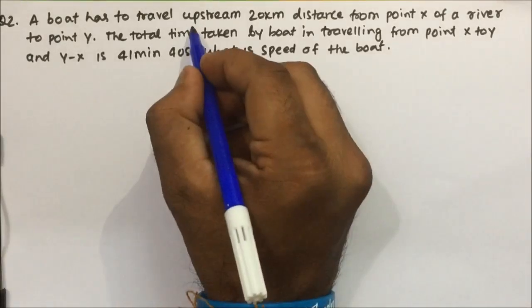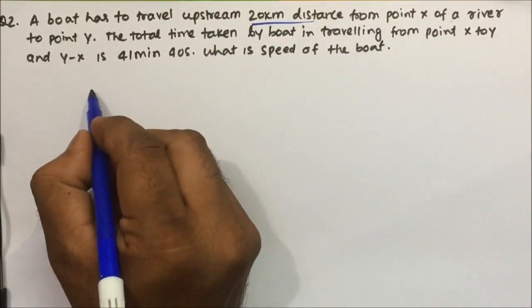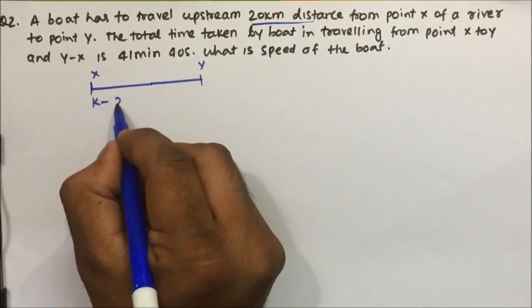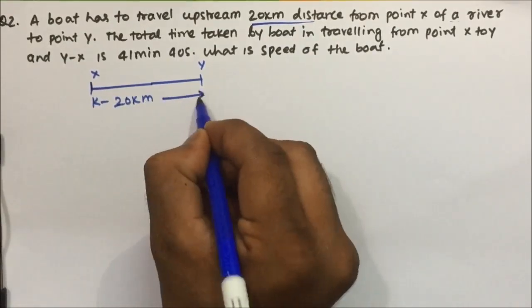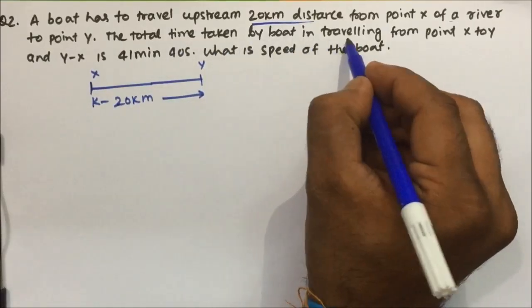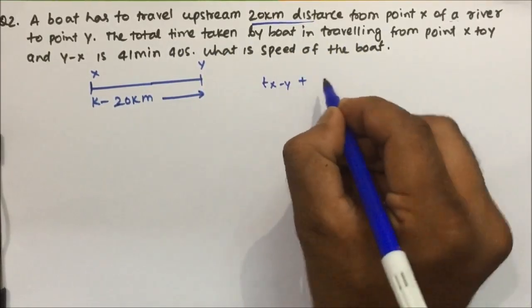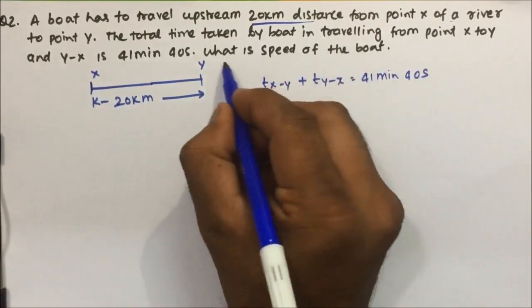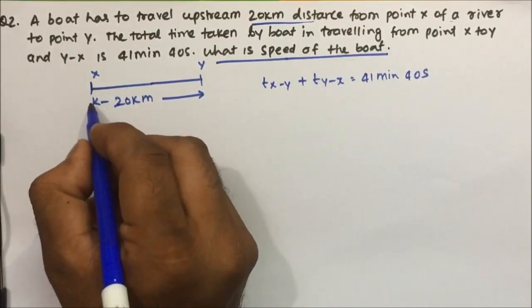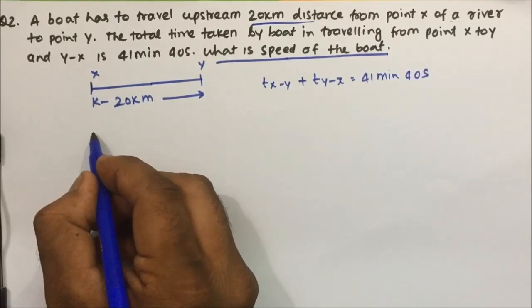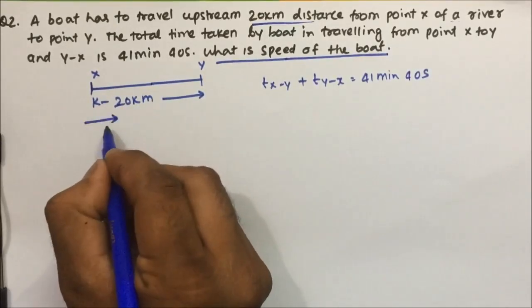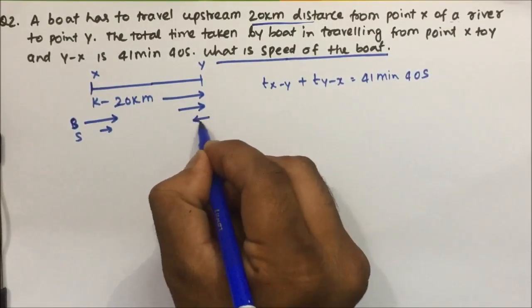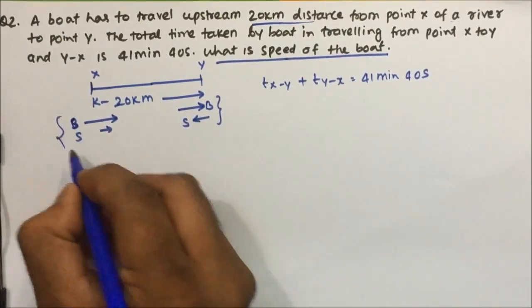Question number 2. A boat has to travel upstream 20 kilometers from point X to point Y. The total time taken by the boat in traveling from point X to Y and Y to X is 41 minutes 40 seconds. They are asking for the speed of the boat. Only the distance is given, so we have to calculate upstream speed and downstream speed — one side the boat goes with the stream, the other side against the stream.